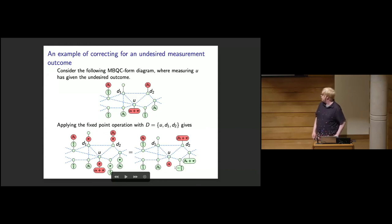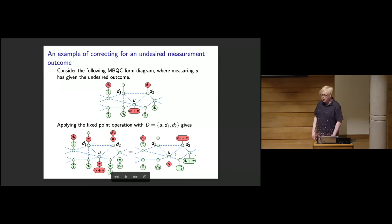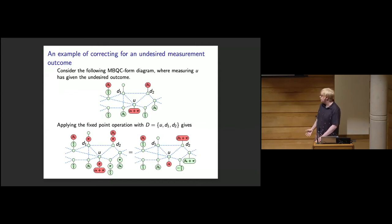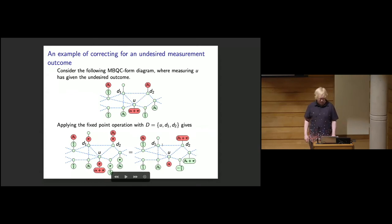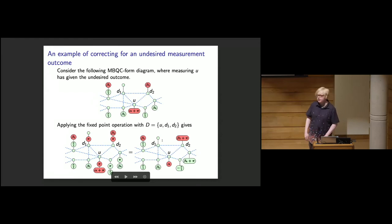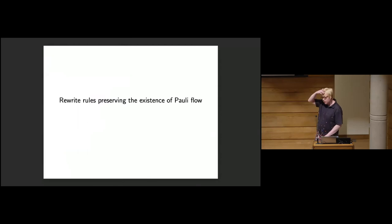What's special about Pauli flow is that with all previously introduced flow conditions, all vertices used for corrections need to be in the future of u. But with Pauli flow, we can use qubits in the past for corrections, as long as they are Pauli measurements. For example, correction qubit d1 is in the past of u, but because it's a Pauli X measurement, placing the red pi phase on it does nothing, so we can still correct on it even though it's in the past.